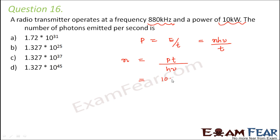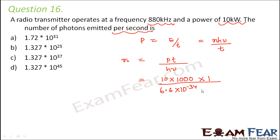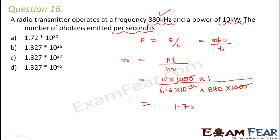Power is 10 kW, which is 10 × 1000 = 10,000 watts. Time is 1 second. h is 6.6 × 10⁻³⁴ J·s. Frequency ν is 880 kHz = 880 × 1000 Hz. Substituting and solving mathematically, the number of photons emitted per second comes out to be 1.72 × 10³¹.